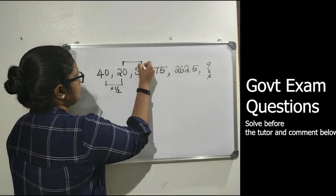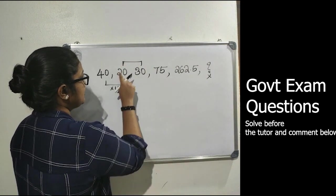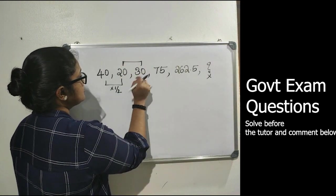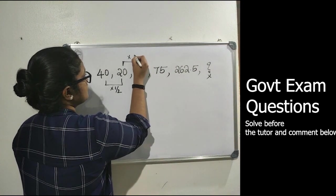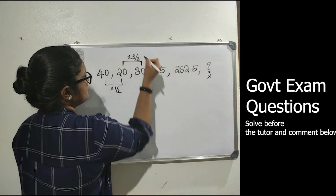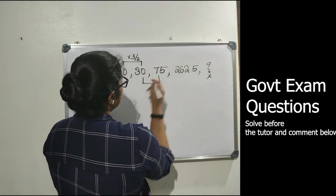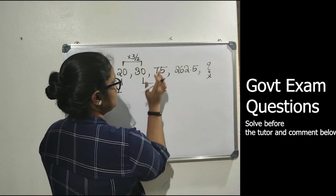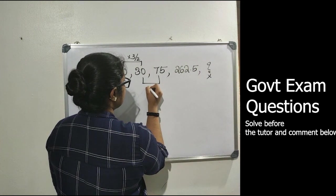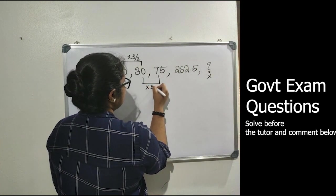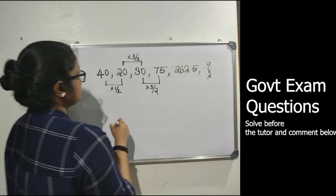20 by 2 is 10, 10 into 3 is 30. So that is 20 into 3 by 2. Now 30 by 2 is 15, 15 into 5 is 75. So this is 30 into 5 by 2.